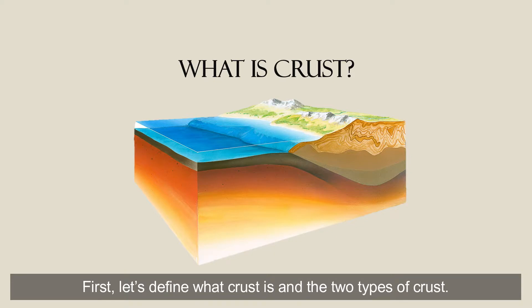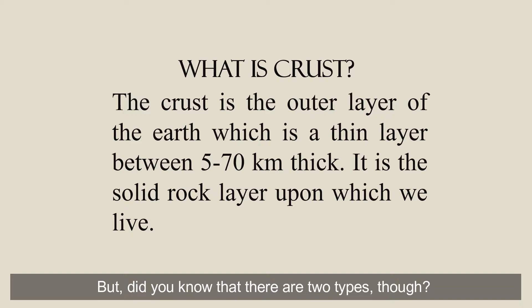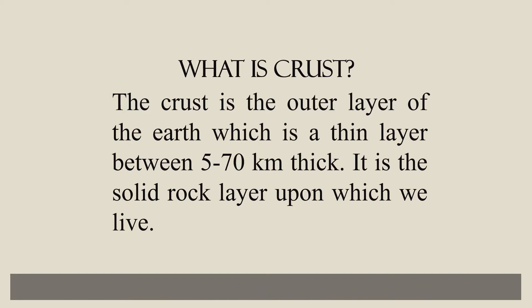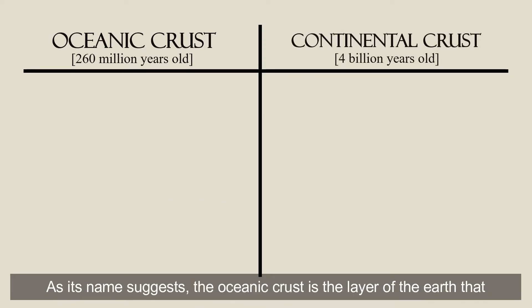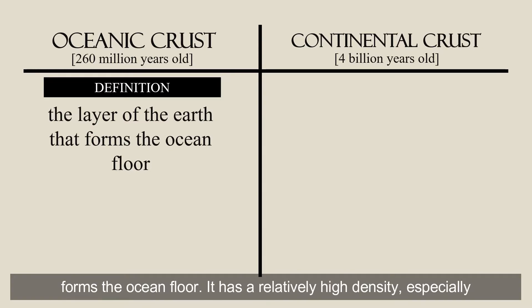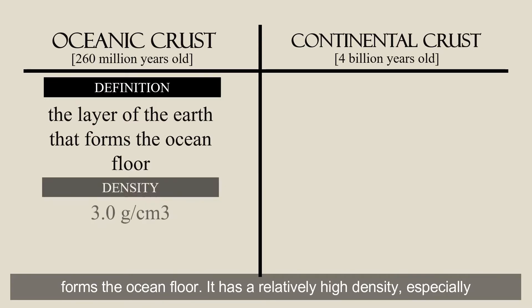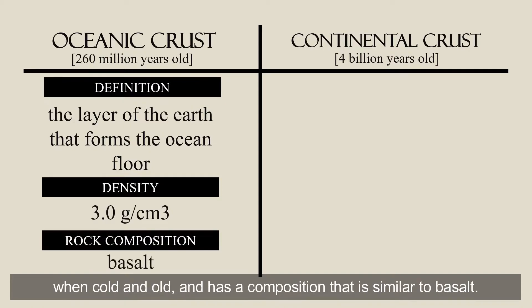First, let's define what crust is and the two types of crust. The crust is the outer layer of the Earth — a thin layer between 5 to 70 kilometers thick. It is the solid rock layer upon which we live. There are two types: one is called the Oceanic crust and the other is the Continental crust. As its name suggests, the Oceanic crust is the layer of the Earth that forms the ocean floor. It has a relatively high density, especially when cold and old, and has a composition similar to basalt.